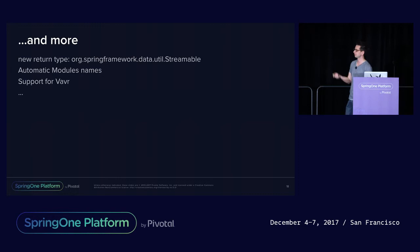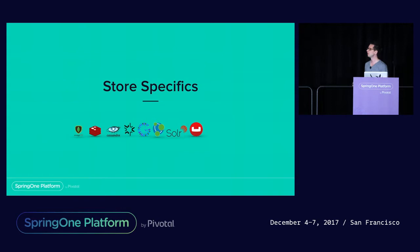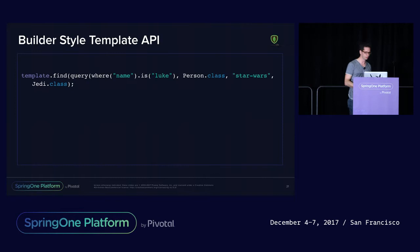There are many more features than we've listed here: a new Streamable type, automatic module names for Java 9, support for Vavr types out of the box, and more. These are the core themes. There are blog posts on our website with the full list. We just don't have time to cover everything because we also want to go into store-specific features.